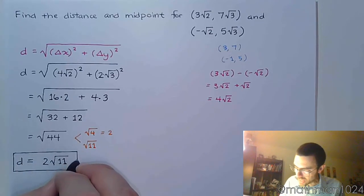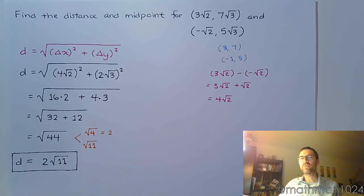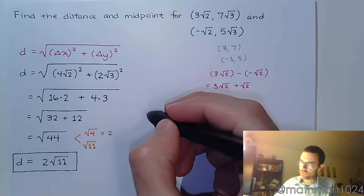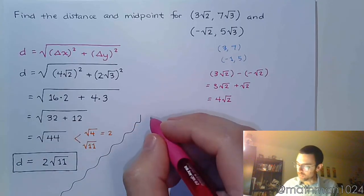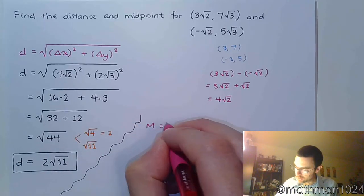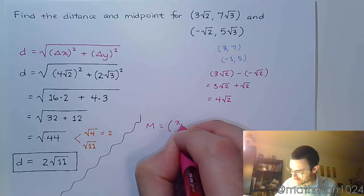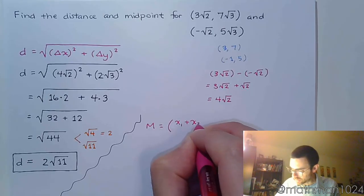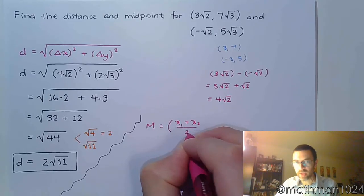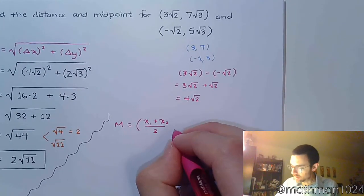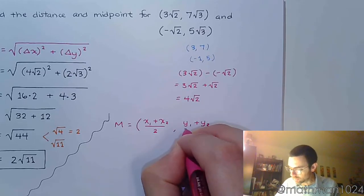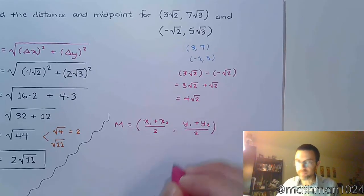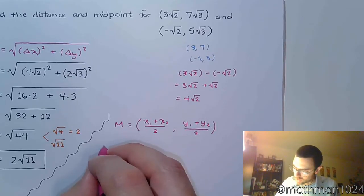The radicals add an extra layer of difficulty, but it's really not all that bad. Even when you change gears, and you start talking about the midpoint. So the midpoint is still the average of the x-coordinates and then the average of the y-coordinates.